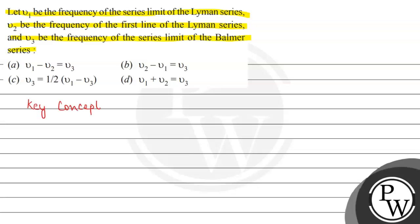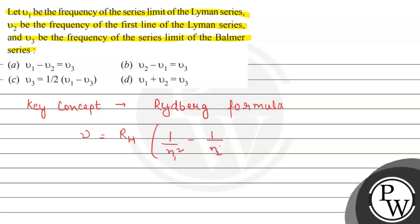The key concept of this question is the Rydberg formula. The Rydberg formula was given by the scientist named Rydberg, who provided a theoretical equation for calculating the large number of lines present in the emission spectrum. The frequency is equal to the Rydberg constant multiplied by (1/N1² minus 1/N2²), where N1 and N2 are whole number values.